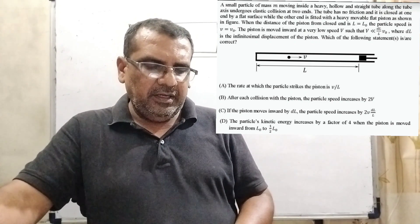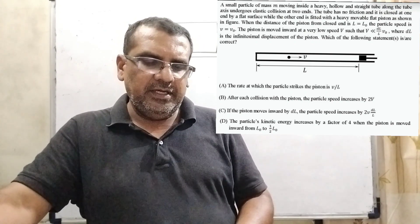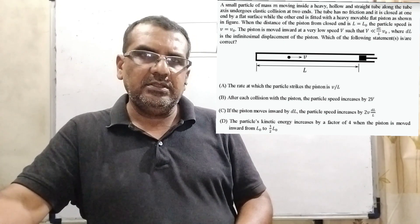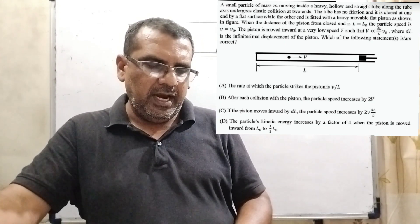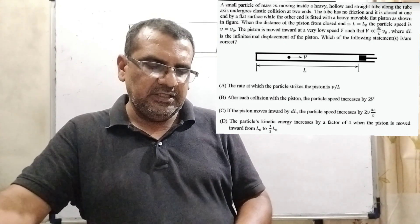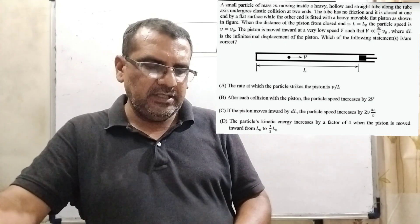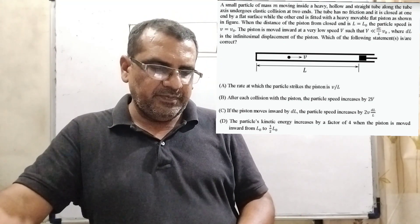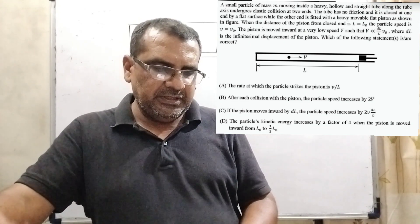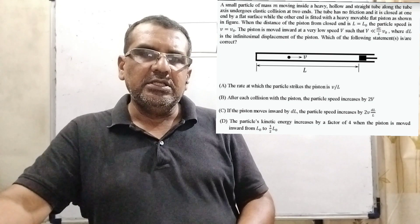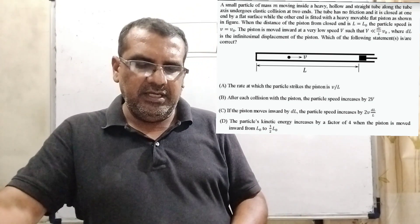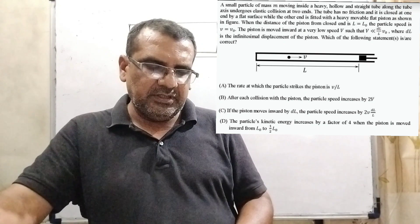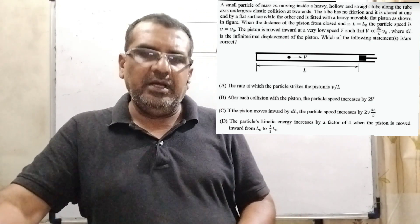Now here is the question. A small particle of mass m moving inside a heavy hollow frictionless tube along the tube axis undergoes elastic collision at two ends. The tube is closed at one end by a flat surface while the other end is fitted with a heavy movable flat piston. When the distance of the piston from the closed end is L = L₀, the particle speed is v = V₀. The piston is moved inward at a very low speed V such that V is much less than dL/L · V₀, where dL is the infinitesimal displacement of the piston. Which of the following statements are correct?